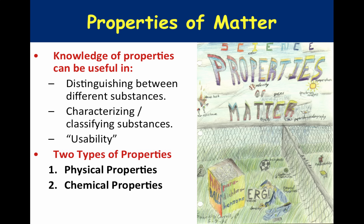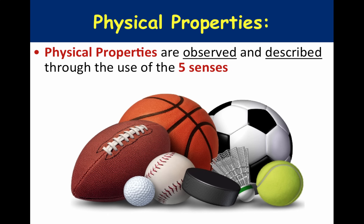There are two types of properties we're going to study: physical properties and chemical properties. By definition, physical properties are characteristics of matter that are observed and described through the use of your five senses. Take the sporting equipment here for example — we can use our five senses to make observations. The basketball is a sphere, it's rough, it's orange. The hockey puck is hard and smooth on top but rough on the sides.